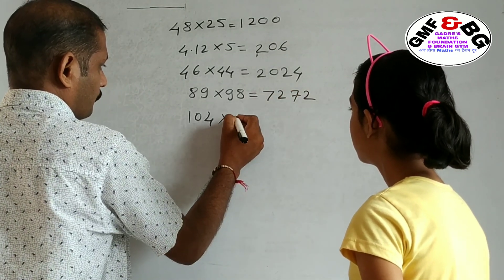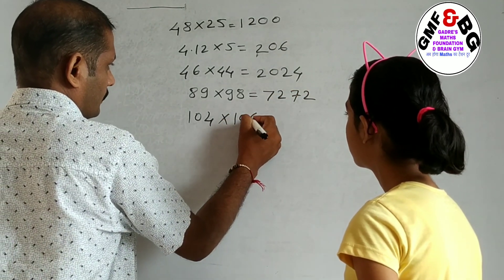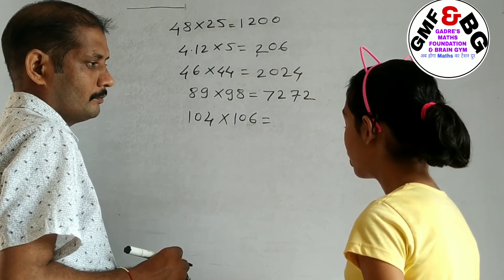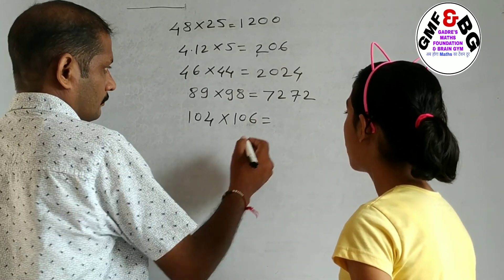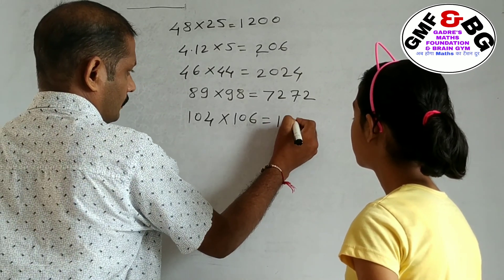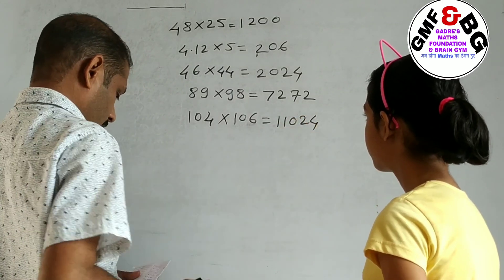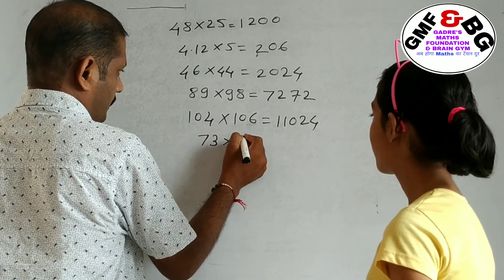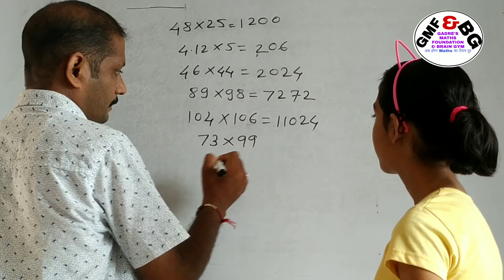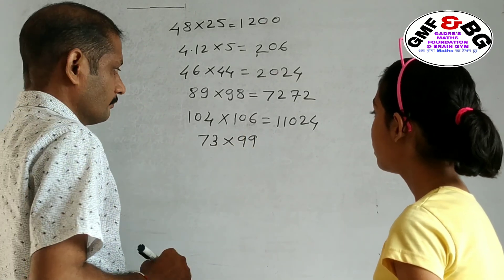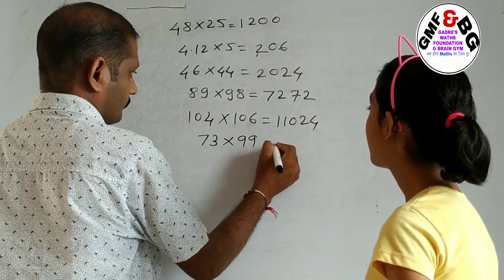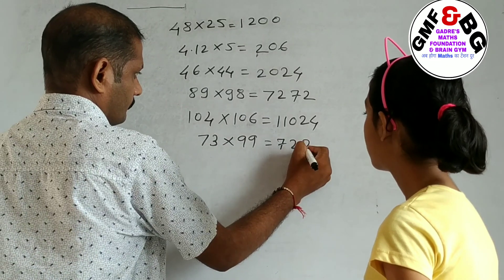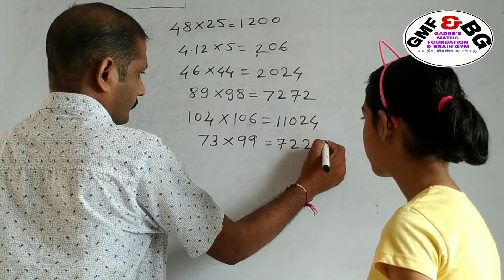Next: 104 × 106 equals 11024. Next: 73 × 99 equals 7227.